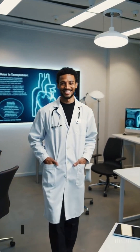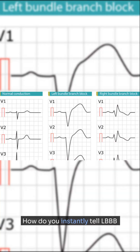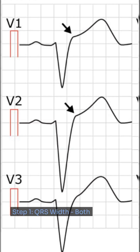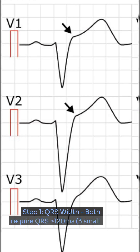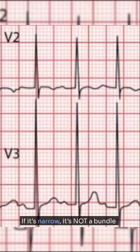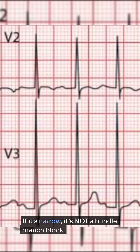Hey! How do you instantly tell LBBB from RBBB on an ECG? Here's the quick and dirty breakdown. Step 1: QRS Width. Both require a QRS of 120ms — three small boxes. If it's narrow, it's not a bundle branch block.